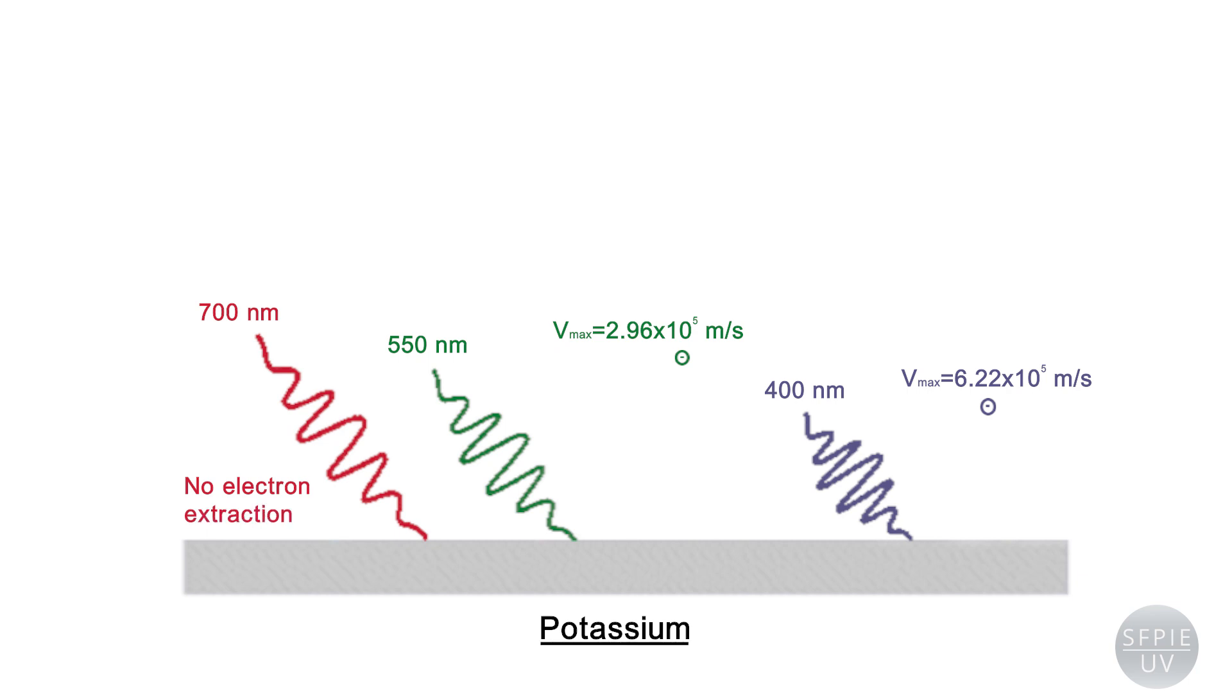Thus, for potassium, the visible red light does not produce the effect, but the green or violet light does since its frequency is higher.